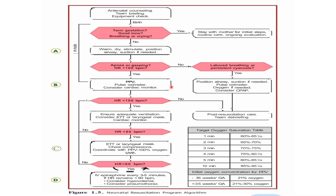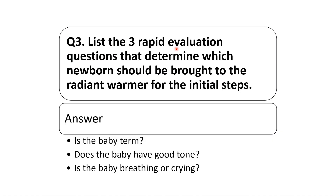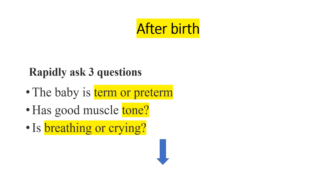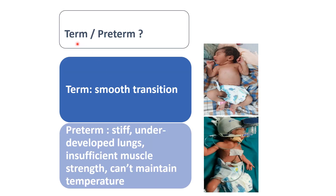Once the baby is delivered, we have to ask three rapid evaluation questions: is the baby term, does the baby have good tone, and is the baby breathing or crying? These are the three things — term, tone, and crying — we rapidly assess when the baby is delivered.